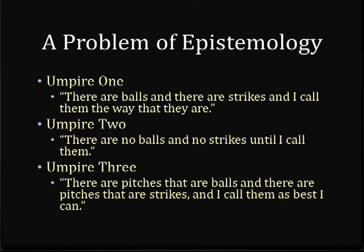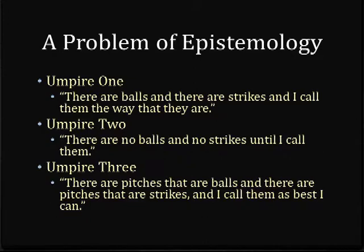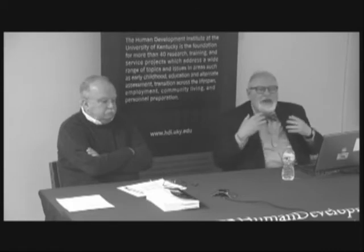Whenever we are talking about diagnosis, we're basically struggling with problems of epistemology — how do we know what we know, and how do we know that what we know is true? I like to phrase this in terms of the problem of the three umpires. The first umpire says there are balls and there are strikes and I call them the way they are — that's the position of radical realism, meaning we believe there are specific mental disorders that are real entities in the real world. The second umpire says there are no balls and no strikes until I call them — that's the position of logical positivism, meaning diagnostic categories are simply mental or social constructs with no reality of their own.